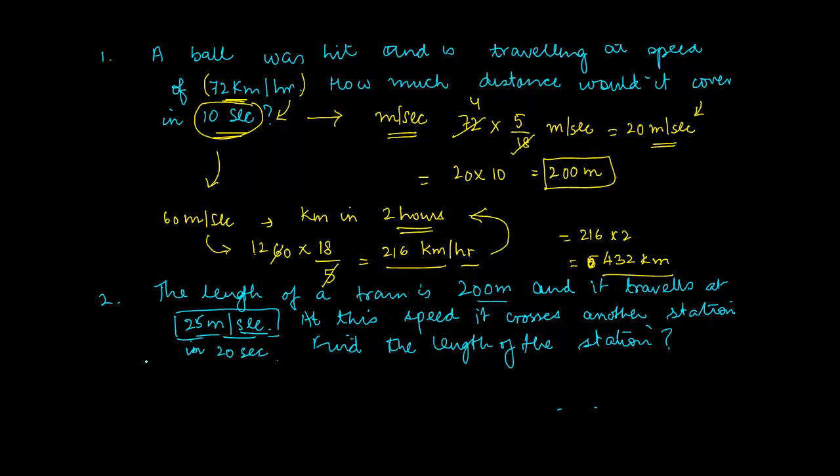Now the thing to be noted here is that the length of the train is 200 meter. And the station which is here we don't know, let's call it as X. This train is travelling at 25 meter per second and it takes 20 seconds for it to cross the platform.